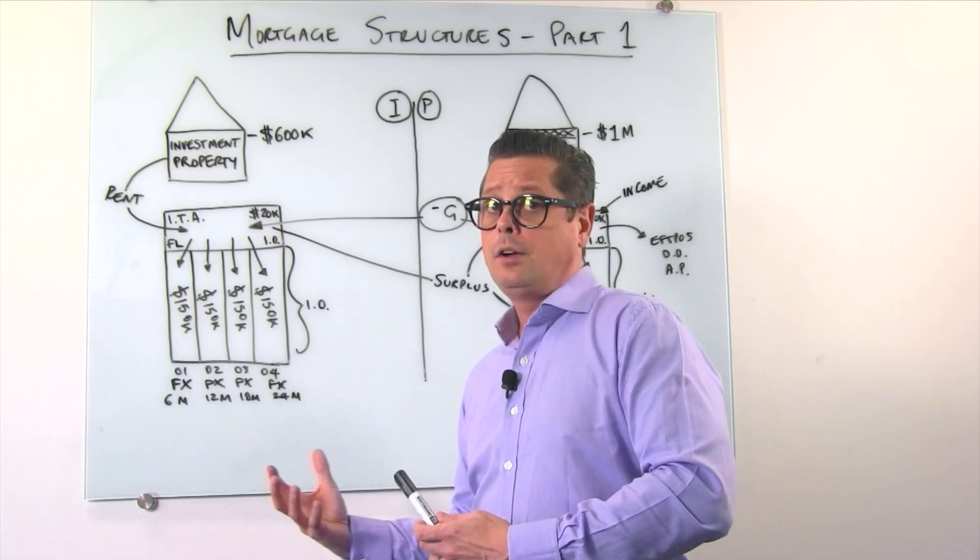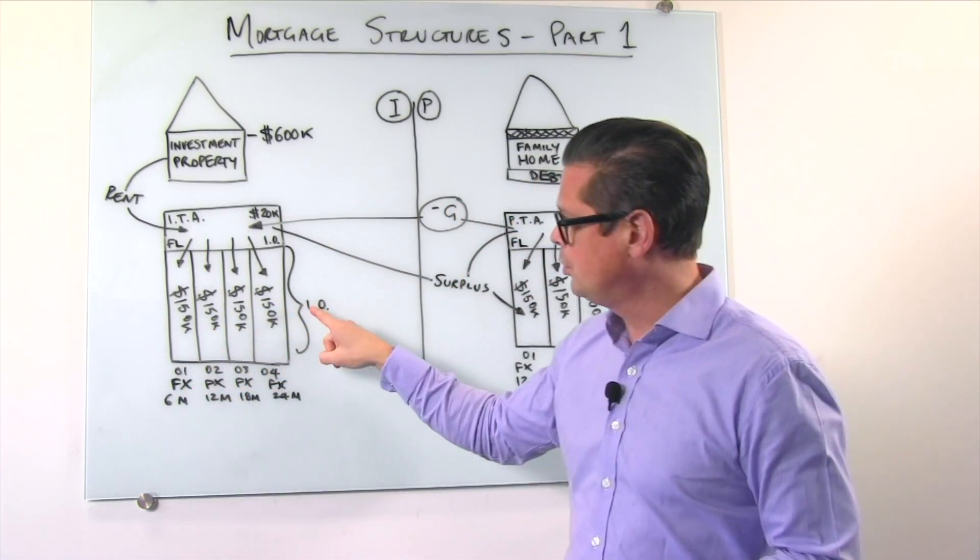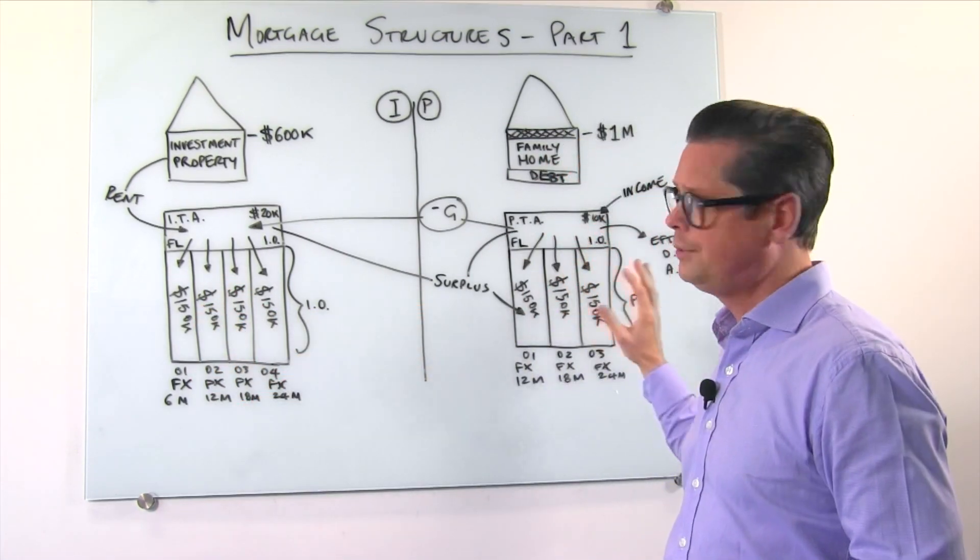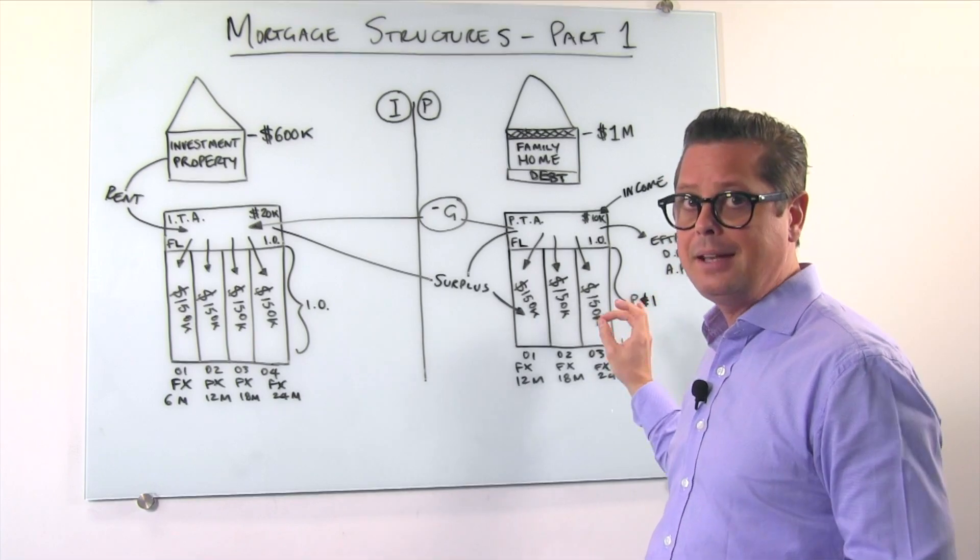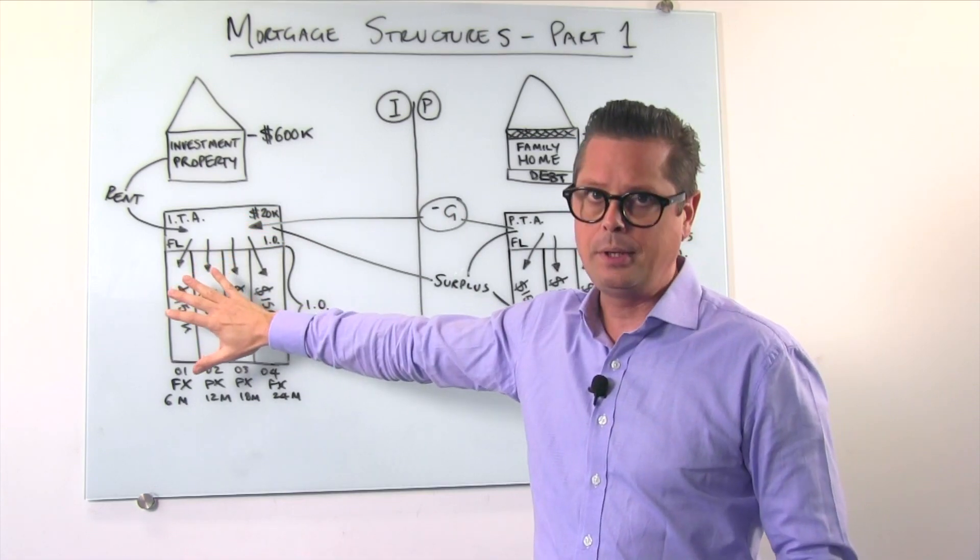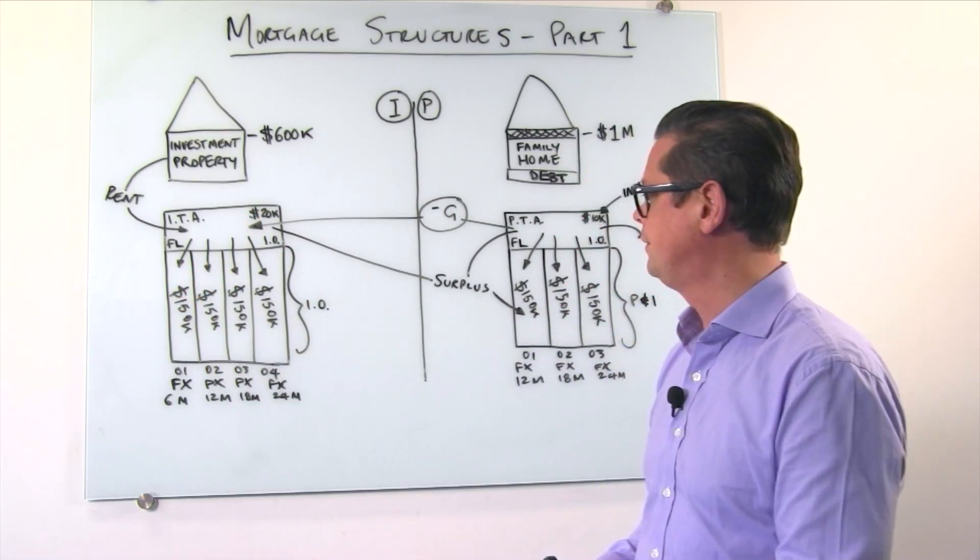Now this debt is interest only versus principal and interest on the other side. If you watched our video on good debt versus bad debt, this is good debt, this is bad debt. So we wouldn't want to pay down a dollar of good debt while we've still got a dollar of bad debt. So the goal is to get rid of this debt first and then by all means turn your attention to your good debt, your investment debt and pay that off second.